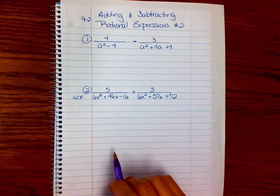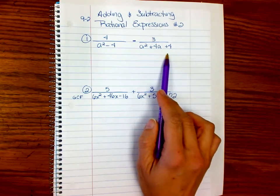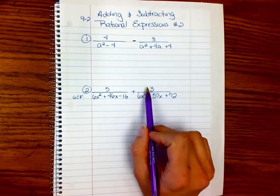The first step in factoring is look for the greatest common factor. Then you have your patterns, your difference of squares, and then if it's a trinomial, you have different ways to do that. But we'll factor that too. So let's get started.